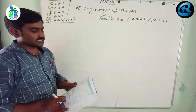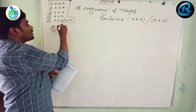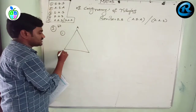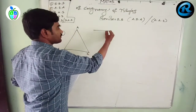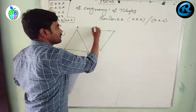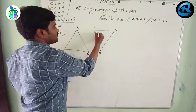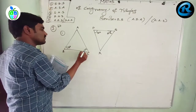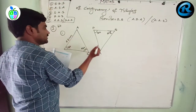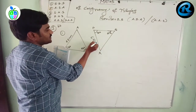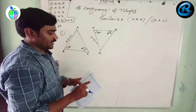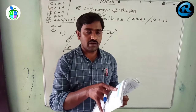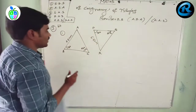Let us solve some problems in exercise 8.3. There are only four questions; let us try to solve all four. In the first question, we have triangle ABC and triangle PQR, where angle P equals 70 degrees, angle Q equals 60 degrees, angle B equals 70 degrees, angle C equals 60 degrees, and AB equals PR equals 6.5 centimeters. We need to find out whether these two triangles are congruent or not, and write the criteria of congruency.